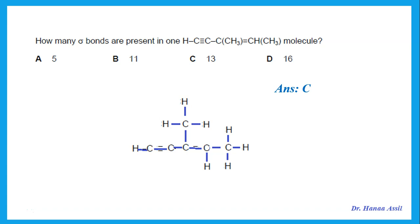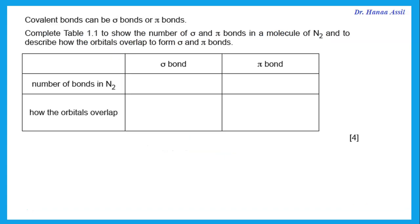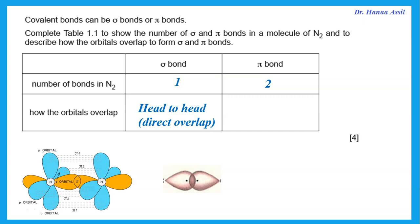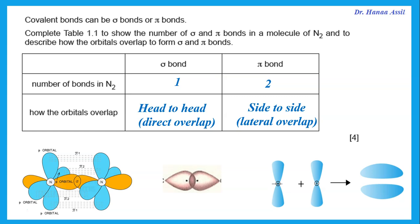Please practice drawing out and counting the number of sigma and pi bonds. Covalent bonds can be sigma or pi. For nitrogen, which has a triple bond, that triple bond is made up of one sigma and two pi bonds. Recall how the orbitals overlap: in the sigma bond the overlap is head-to-head or direct overlap, while the pi bond is due to side-to-side or lateral overlap of the p orbitals.